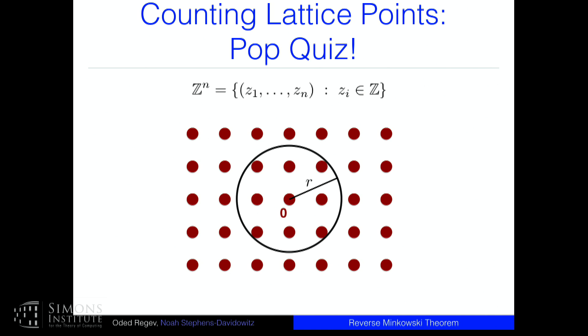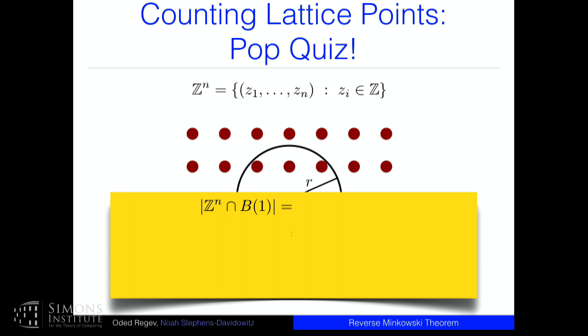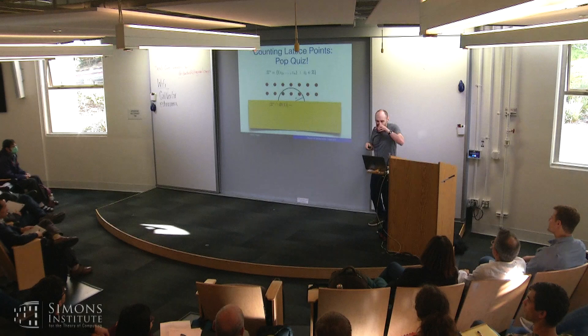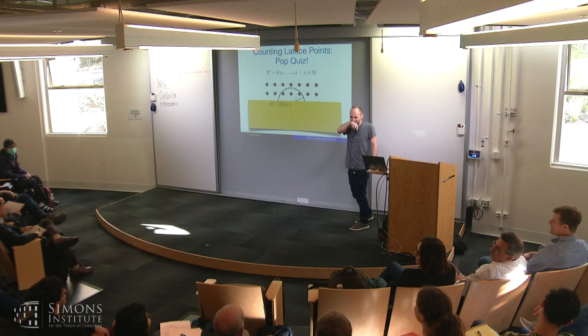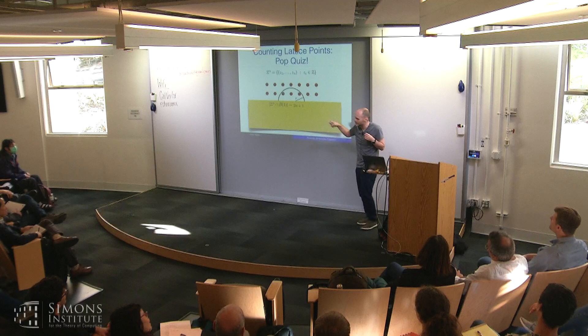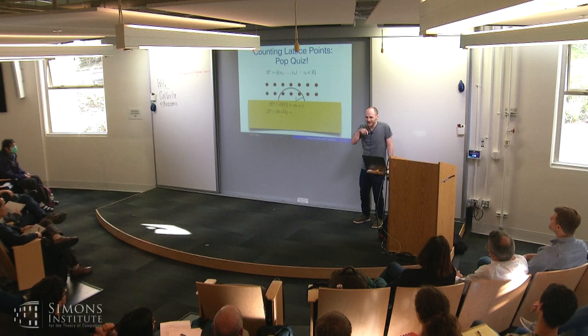This is going to be interactive — there's a pop quiz. Let's play with Z^n. How many points are in a ball of radius 1 in Z^n? The answer is 2N+1: all the unit vectors, their negations, and zero. Slightly harder: how many in a ball of radius √2? The answer is 4·(N choose 2), the number of ways to put ±1 in two of N coordinates — about N².